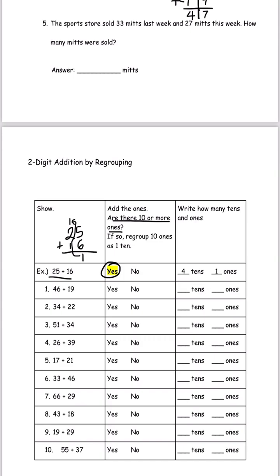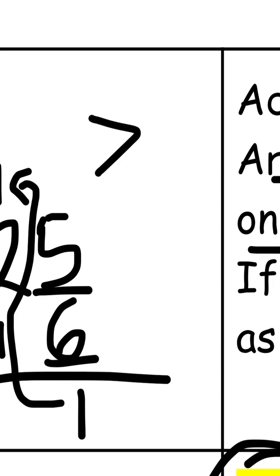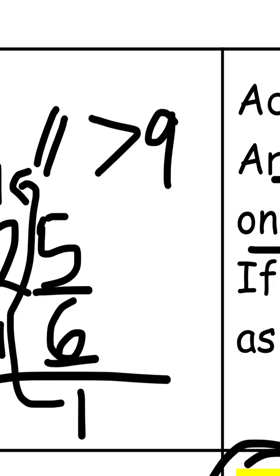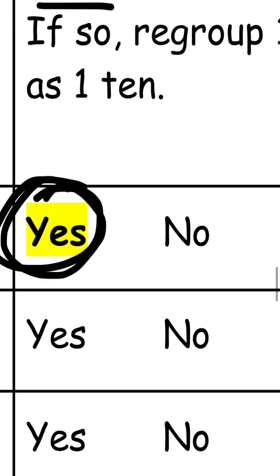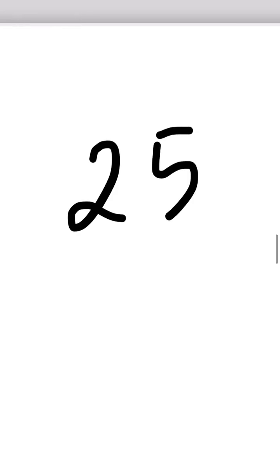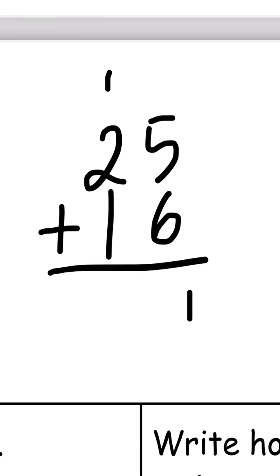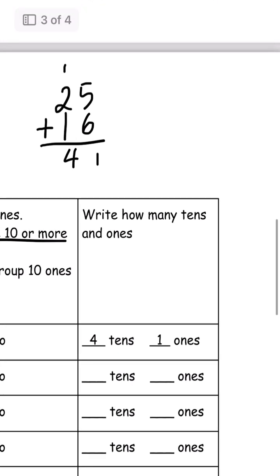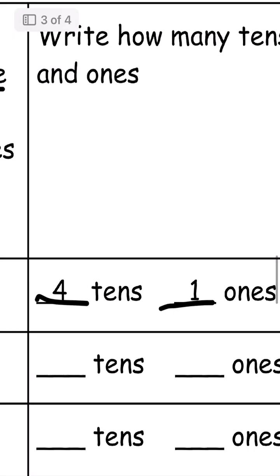When the number is larger than 9, we have to regroup it. So we say yes, and we add like before: 11 and then we add the tens, getting 41. Since we have 41, the 4 is on the tens place and the 1 is on the ones place. So we write 4 tens and 1 one.